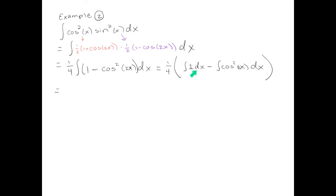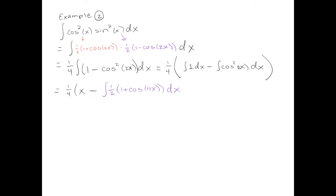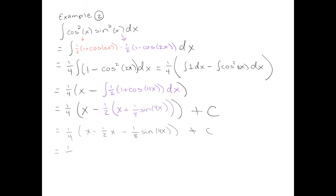We separate into two integrals: the antiderivative of 1, which is x, and the antiderivative of cosine squared of 2x. Notice cosine squared is an even power, so we apply the trig identity again. Pulling out one-half and taking the antiderivative of 1 gives x, and the antiderivative of cosine 4x gives one-fourth sine 4x. After simplifying and combining the x terms, we arrive at the simplest form of our final answer.